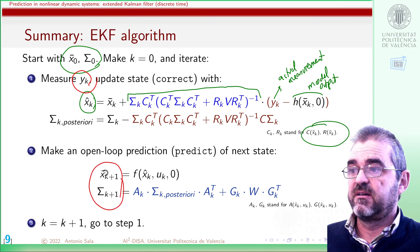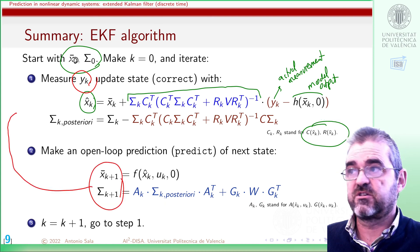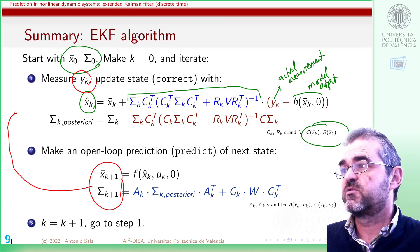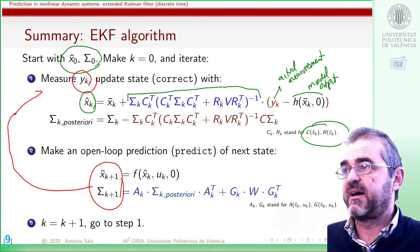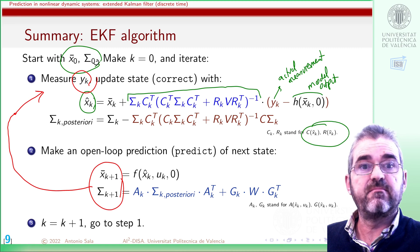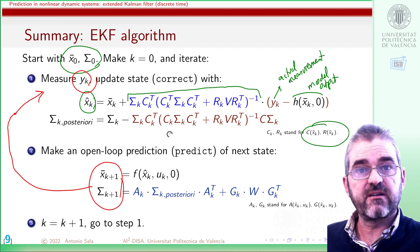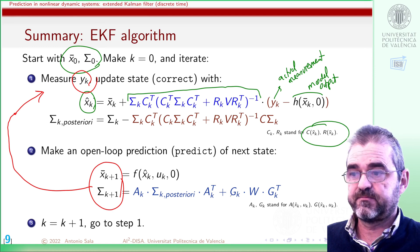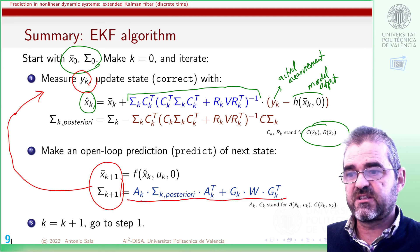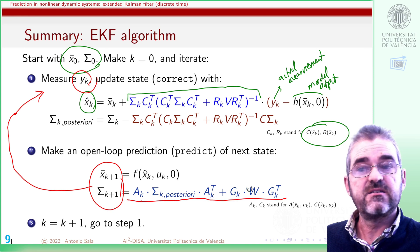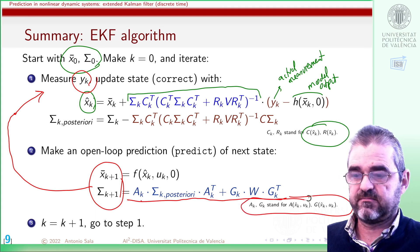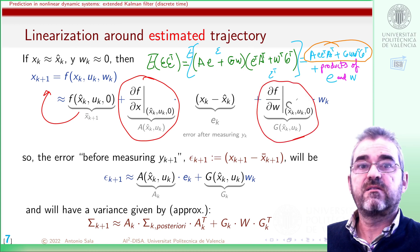I end up having bar x and sigma, just like in the first iteration, so that I can go back to step 1 and with that bar x and sigma evaluate the correction step after the measurement, then propagate to the next sample, and so on. In this prediction step, A_k and G_k stand for those Jacobian matrices we discussed.